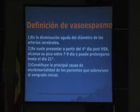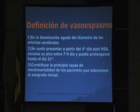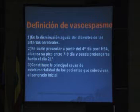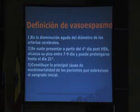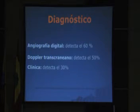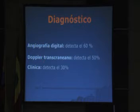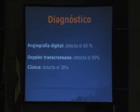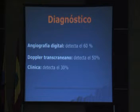El vasospasmo se define como la disminución aguda del diámetro de arterias cerebrales. Se suele presentar entre el día cuarto después de la hemorragia subaracnoidea, alcanza su pico máximo entre el séptimo y noveno día, y se puede prolongar en casos muy raros hasta el día 21. Constituye la principal causa de mortalidad en los pacientes que sobreviven hasta el grado inicial.